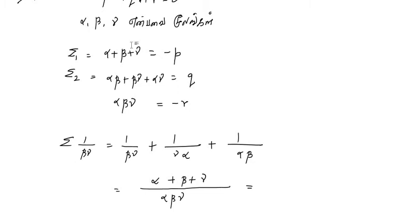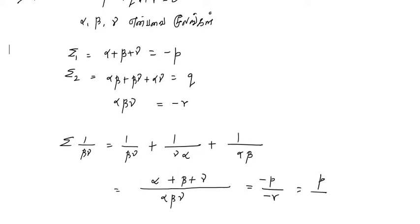Alpha plus beta plus gamma is equal to minus p, and alpha·beta·gamma is equal to minus r. So sigma(1/βγ) equals minus p divided by minus r. Minus and minus cancel, giving the answer: p/r.